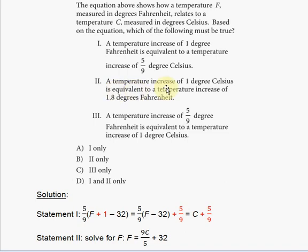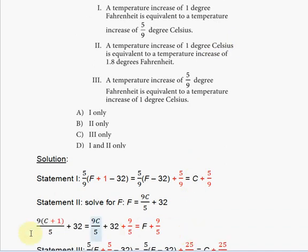Now we're ready to increase the temperature in Celsius by one degree, doing the same thing we did for statement one. We substitute C plus one into the equation: the new F = 9(C + 1)/5 + 32.